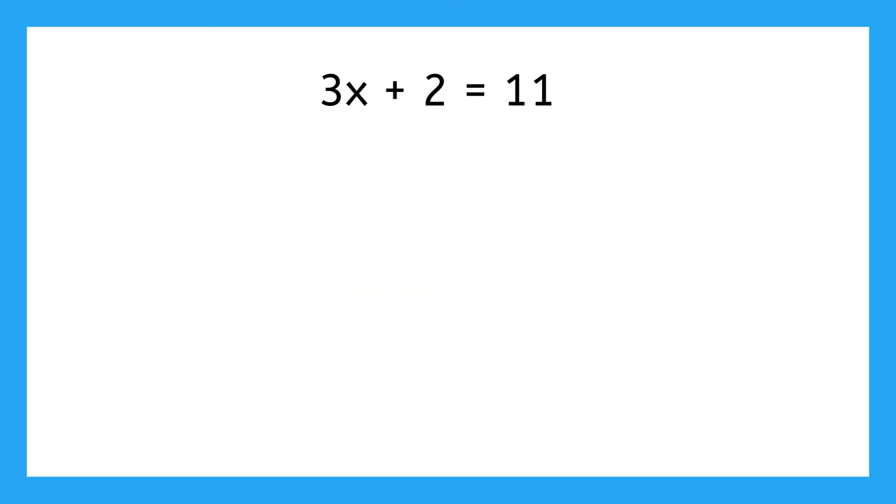When we have an equation that looks something like this, 3x plus 2 equals 11, that has just one variable - can you find it? Yes, the x right here. That means that this equation has just one solution.